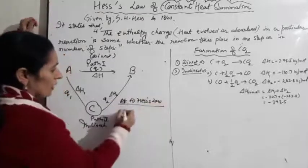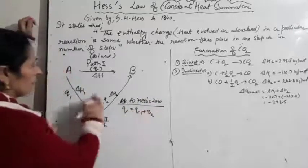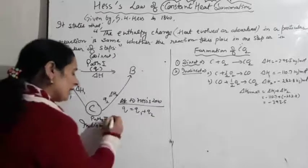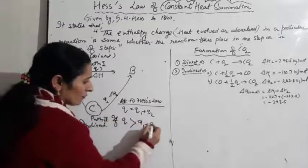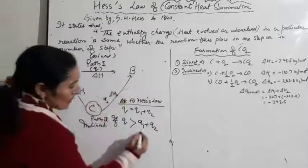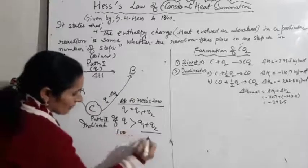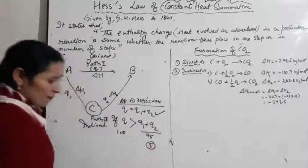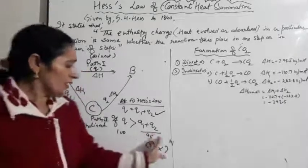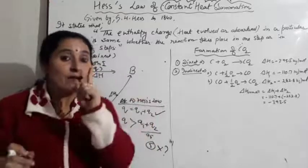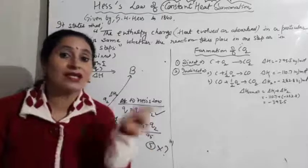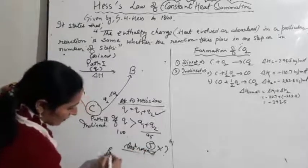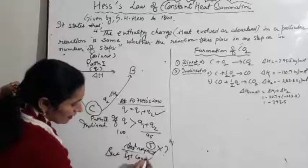According to Hess's Law, Q should equal Q1 plus Q2. If Q is greater than Q1 plus Q2 — say Q was 100 and indirect path gave 95 — then 5 kJ of energy has disappeared. But the First Law of Thermodynamics says energy can neither be created nor destroyed. So this scenario would violate the First Law.